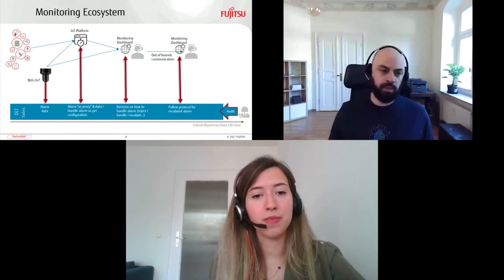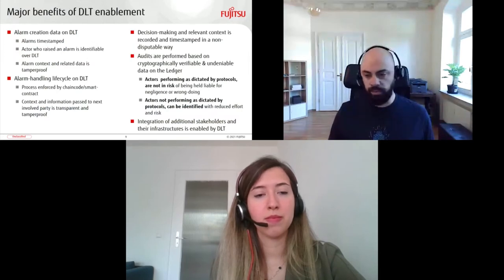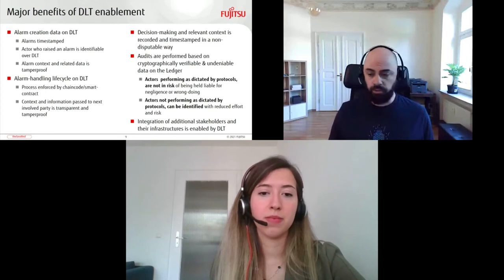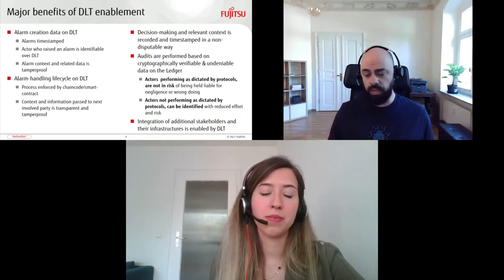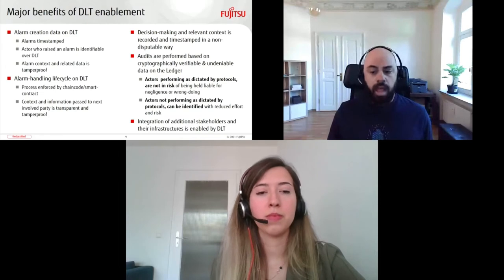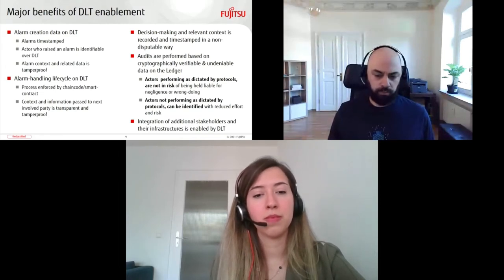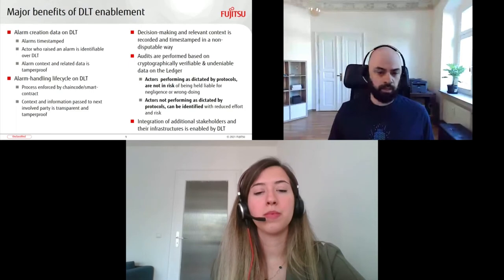We are managing to record the whole critical reporting chain on the ledger with undeniable, cryptographically verifiable facts and actions, reducing the risk and effort required to perform an audit. To recapitulate, the major benefits of DLT enablement are: alarms and relevant data recorded on DLT; handling recorded on DLT with the whole process there; the process itself enforced by chaincode rules — who is required to engage and when; decisions and their context tightly bound to the time they were taken; auditing greatly enhanced and risk reduced. Actors who follow protocol are protected. It is easy to identify wrongdoing or negligence in a non-disputable way and address liabilities. Finally, the technical ecosystem is extensible in a decentralized way — stakeholders can be integrated to Hyperledger Fabric and enjoy the same benefits.